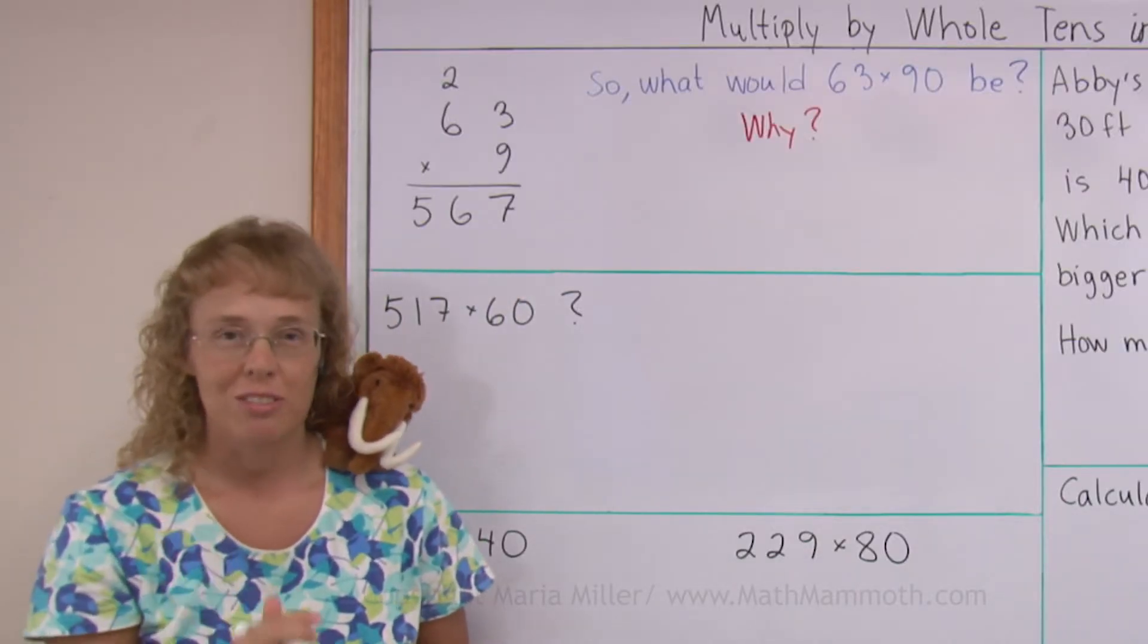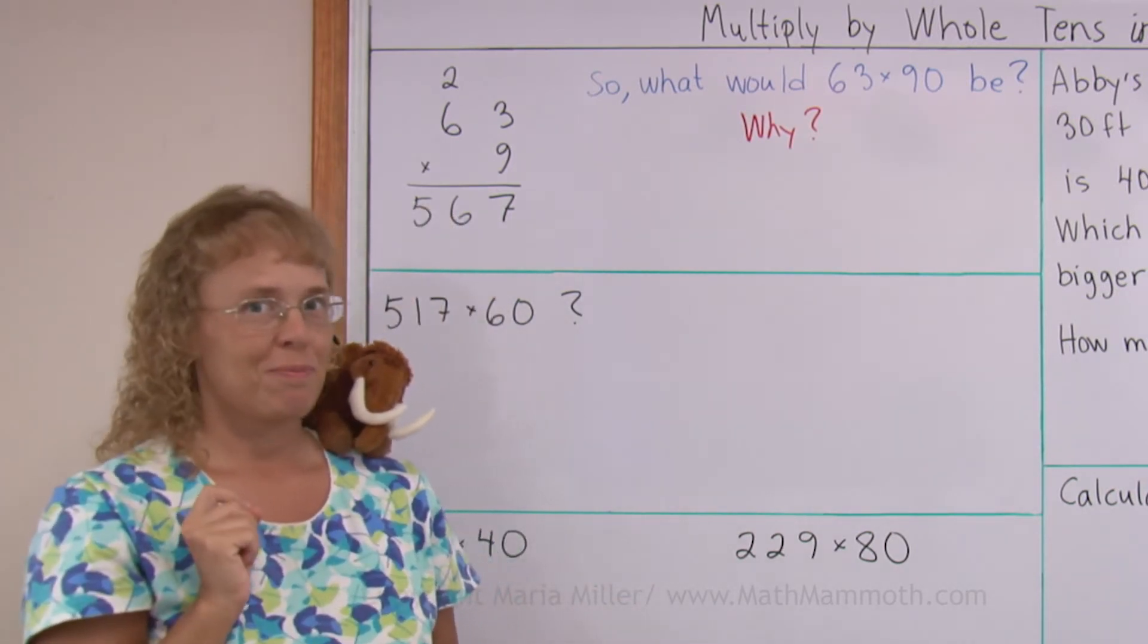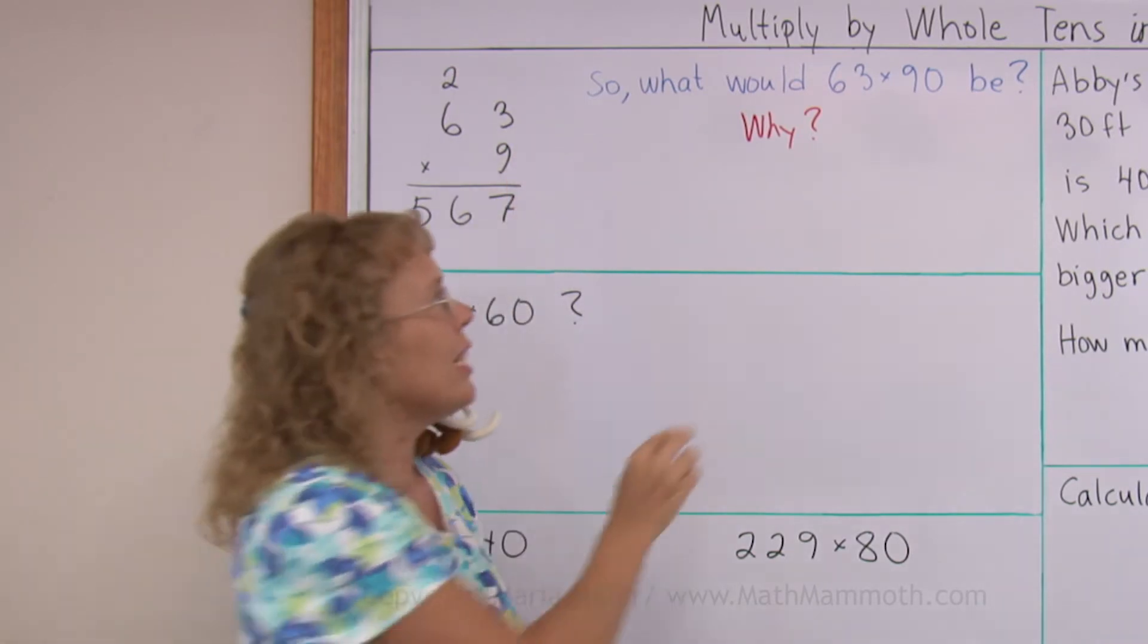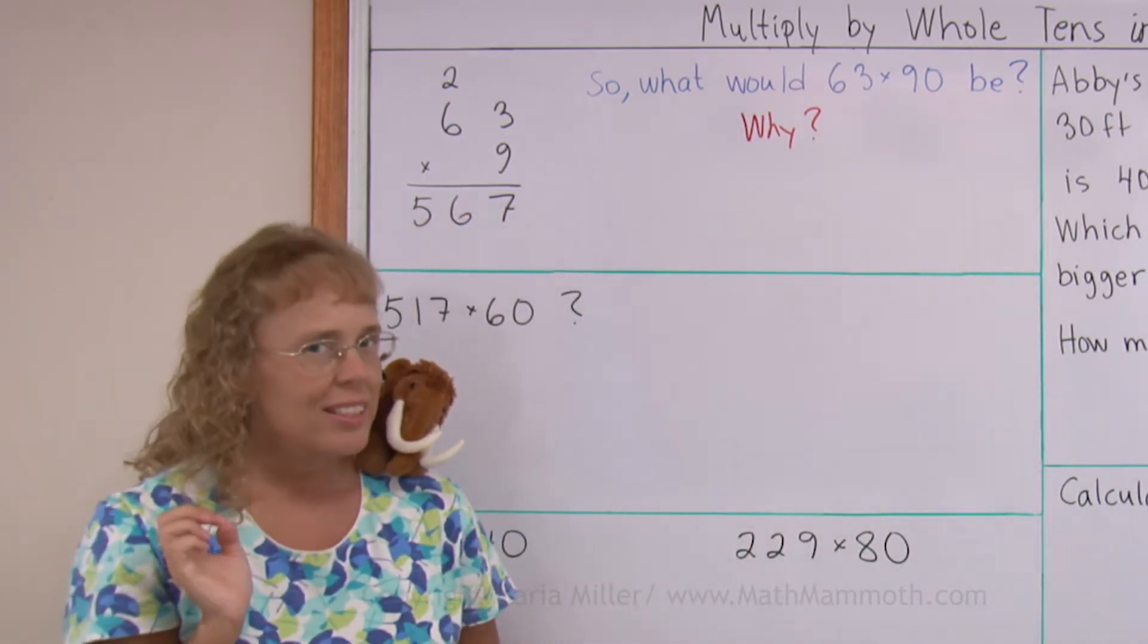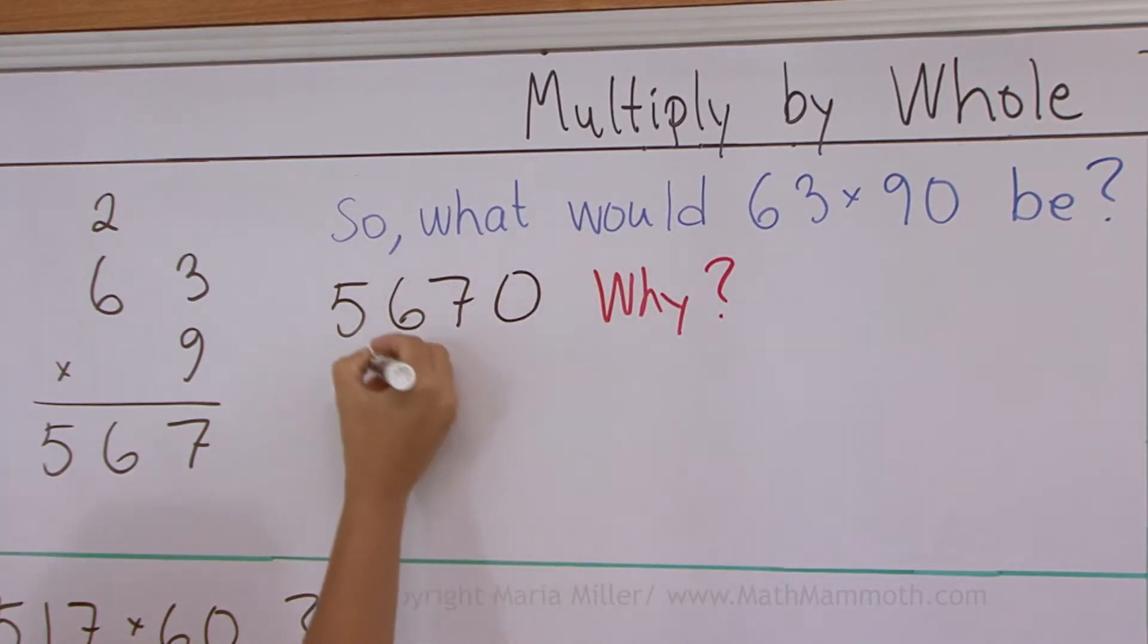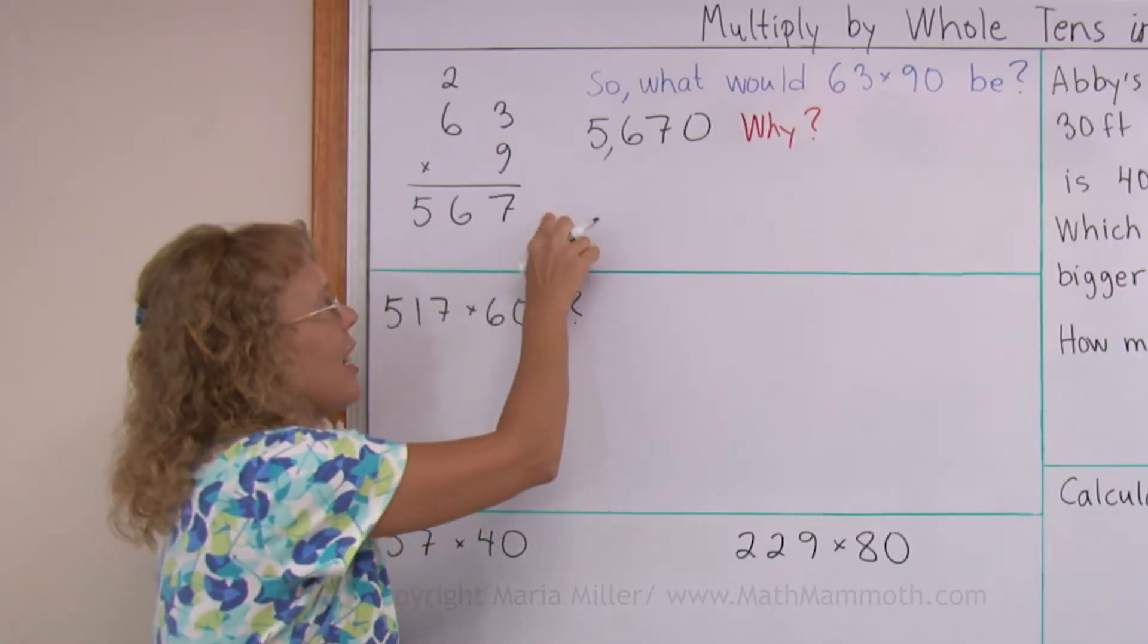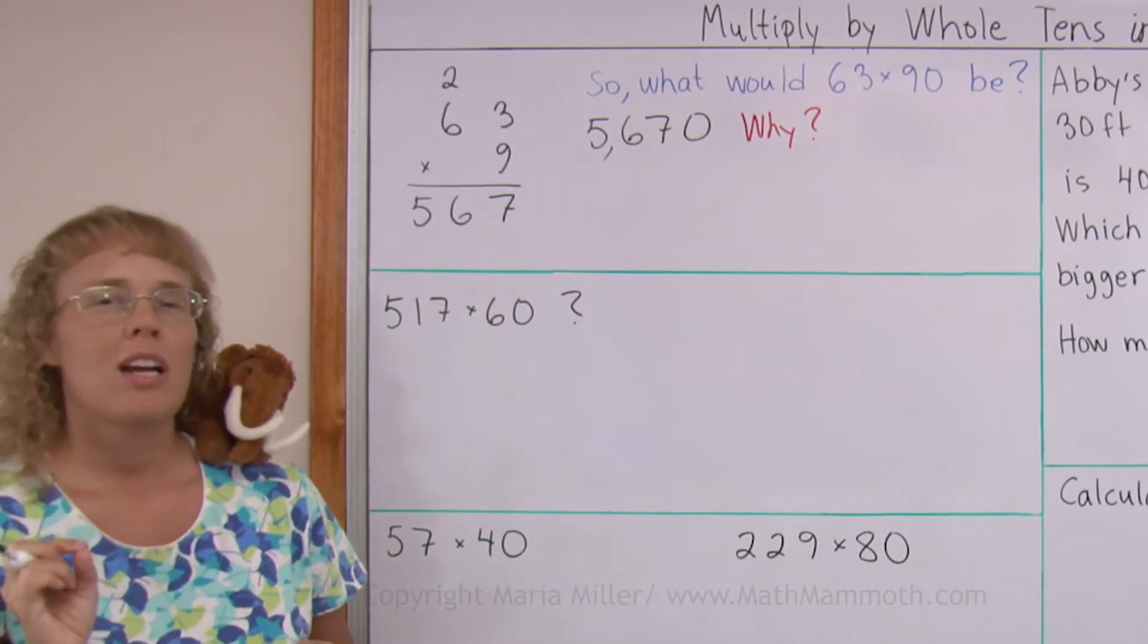And now I have a question for you. What do you think 63 times 90 would be? See, I just calculated 63 times 9, but what about 63 times 90? There's the whole 10 multiplying by 90. Can you guess? I think you can. I'm going to tell you what it is. It's going to be 5670. In other words, I can take this and tag a zero there. And now why would that be?